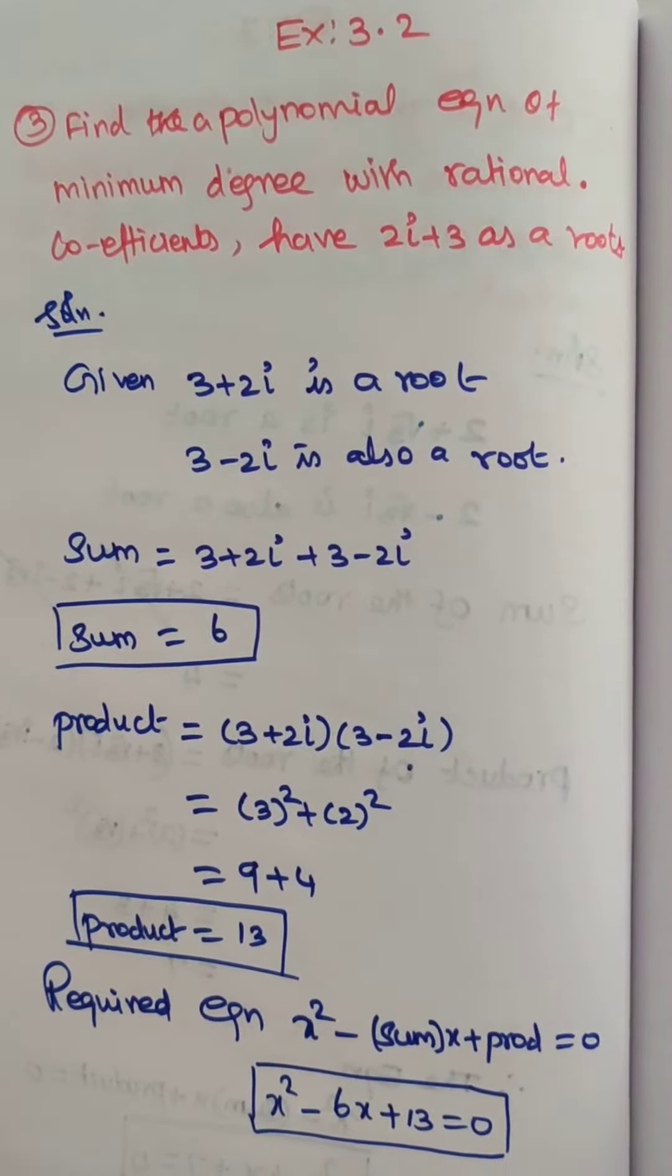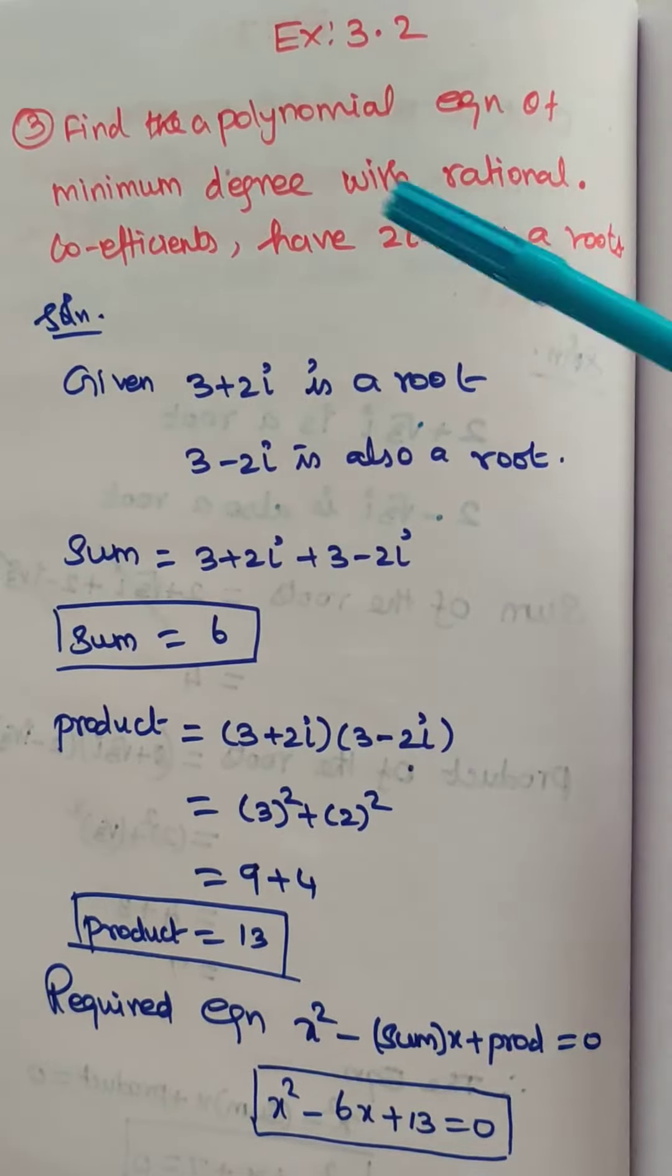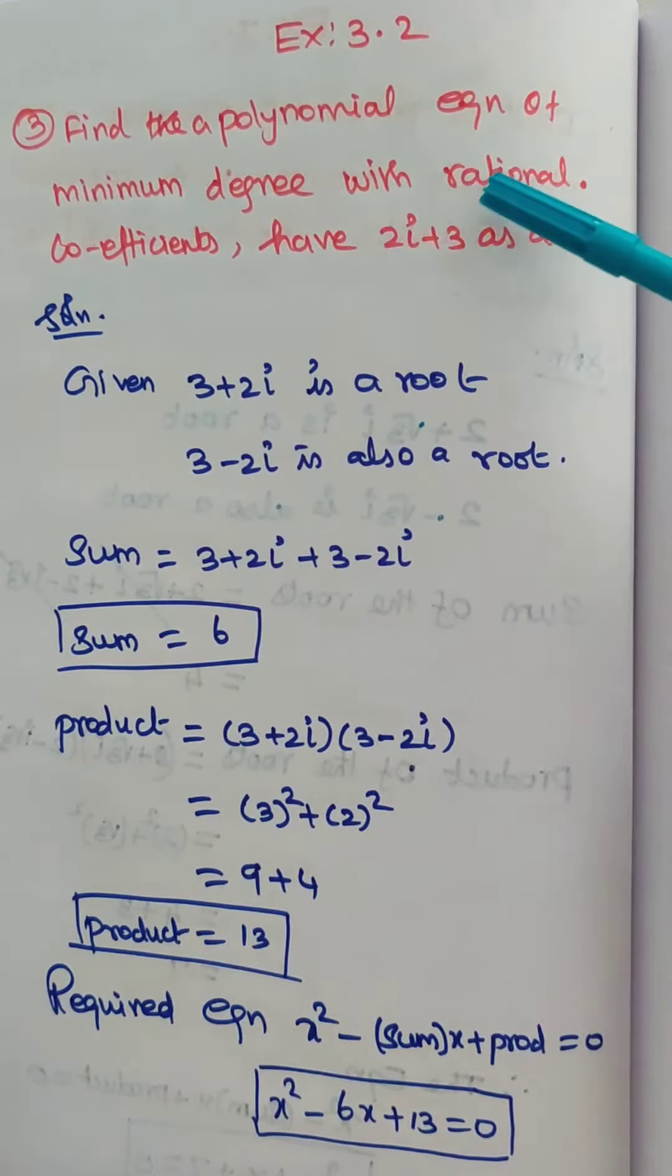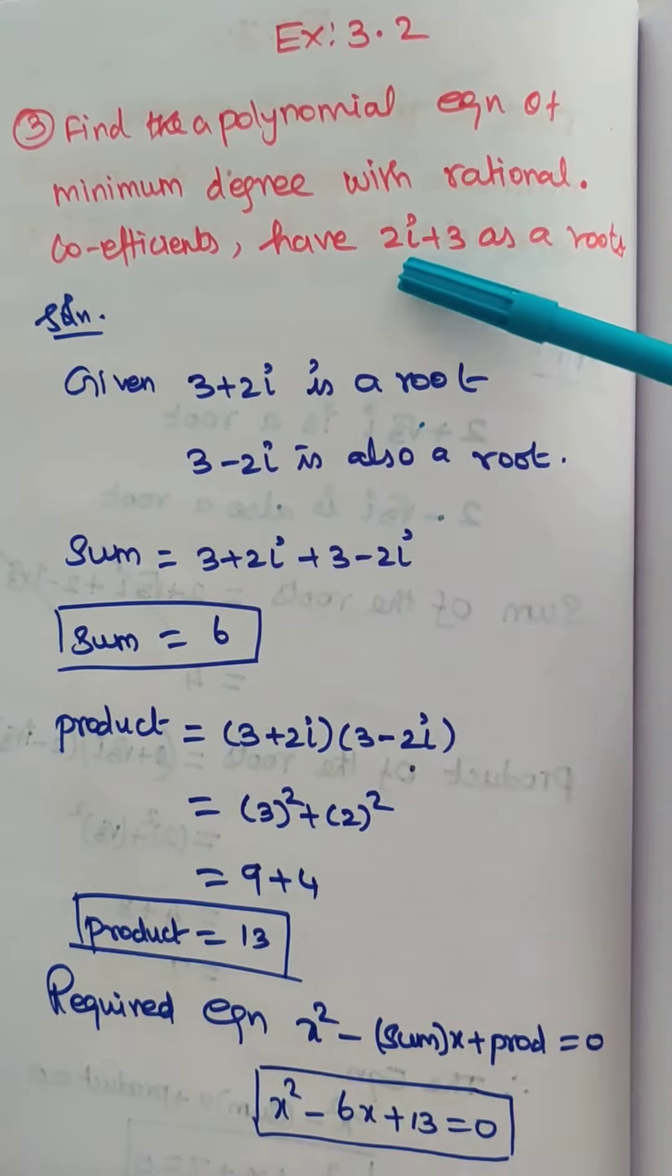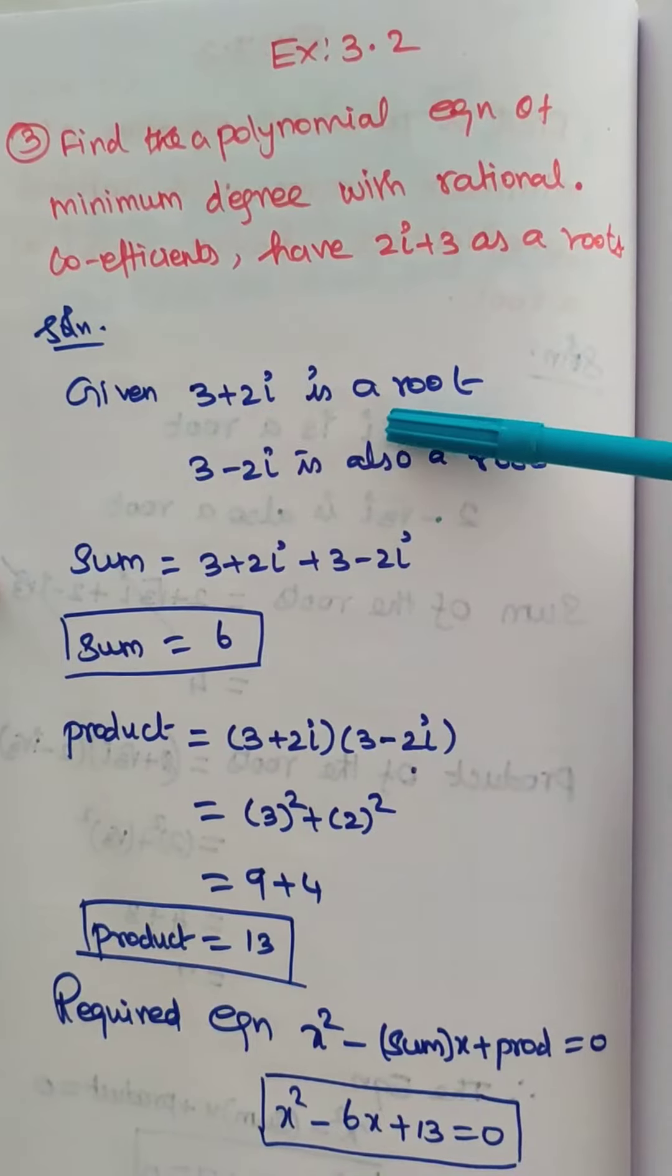Hi students, this is Dinesh here. Today we are going to discuss Exercise 3.2, Question Number 3: Find a polynomial equation of minimum degree with rational coefficients having 2i plus 3 as a root. The given root is 3 plus 2i.